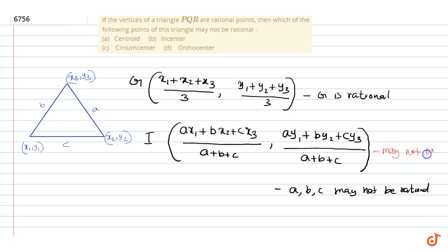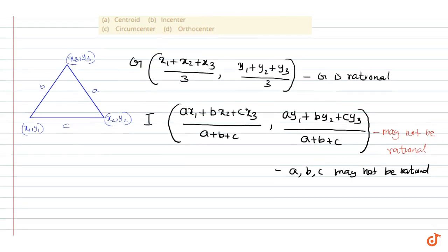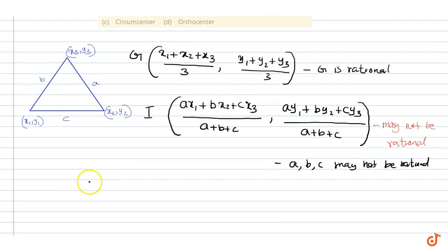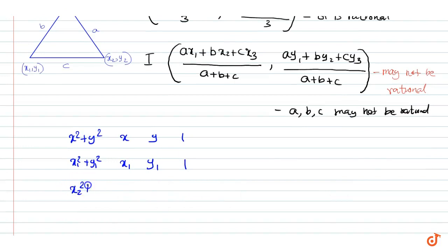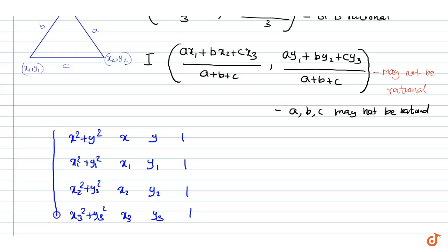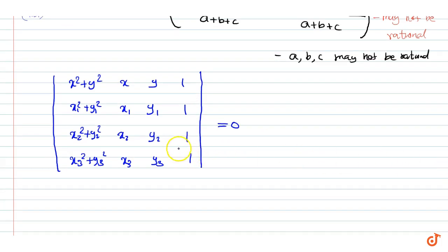Now for the circumcenter: the circumcenter of a triangle is given by the determinant equation with rows (x1², + y1², x1, y1, 1), (x2² + y2², x2, y2, 1), and (x3² + y3², x3, y3, 1) equal to 0, which gives the equation of the circumcircle of the triangle.